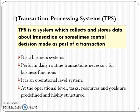At the operational level we have the Transaction Processing System, or TPS. For any functionalities — accounts, purchase, sales, or manufacturing — you will find TPS exists at the operational level. A transaction processing system collects and stores data about transactions, or sometimes controls decisions made as part of the transaction. It is a business system that performs daily routine transactions necessary for business functions. At the operational level, tasks, resources, and goals are predefined and it is highly structured.